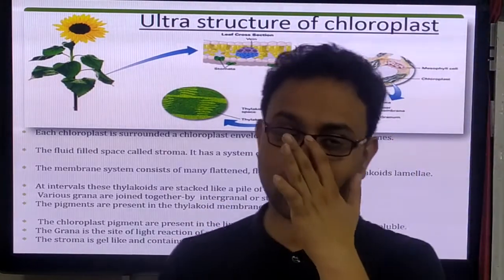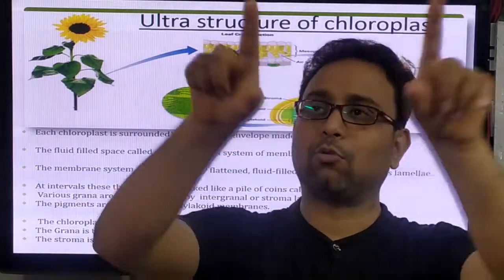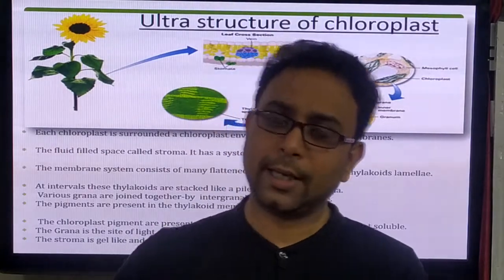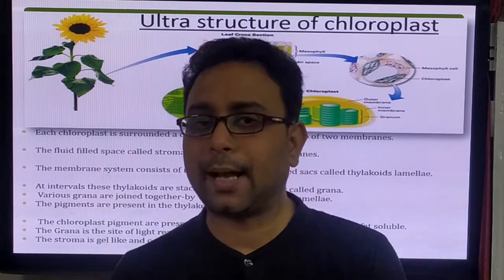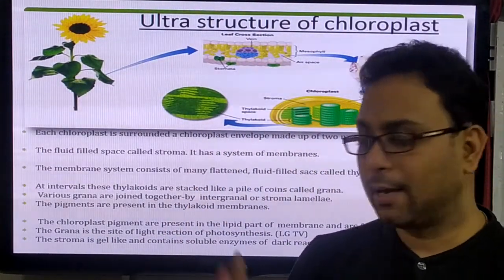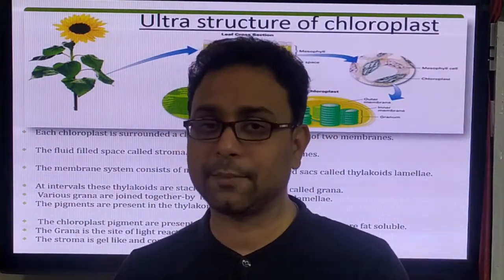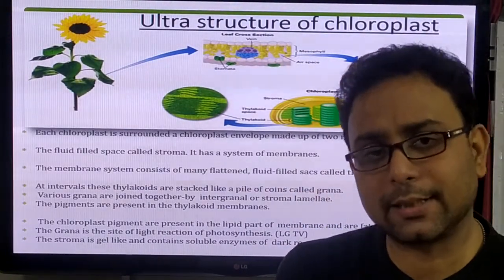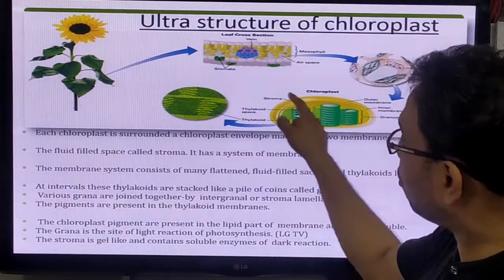If we discuss the structure of the plant cell, the plant cell's outer covering is called the cell wall, which is made up of cellulose. Inside the cell wall, the cell membrane is there. Plant cells have a well-defined nucleus because they are eukaryotic cells. Plant cells also have mitochondria for energy. More importantly, plant cells have the organelle called the chloroplast.